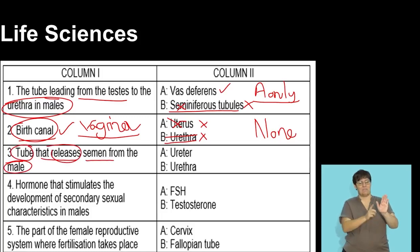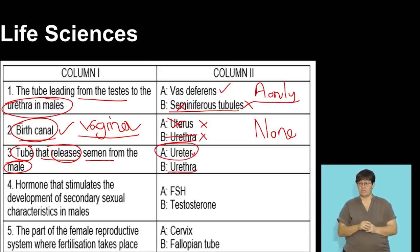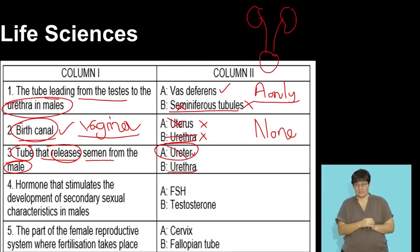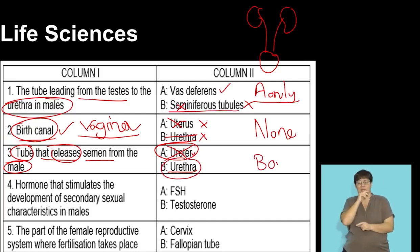The next question: the tube that releases semen from the male. The options given are the ureter and the urethra. The ureters carry urine from the kidneys to the bladder — they are not correct. The tube that carries semen out of the body, along with urine, is called the urethra. So the answer here is B only.